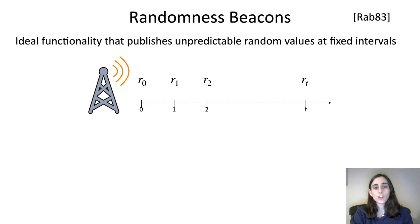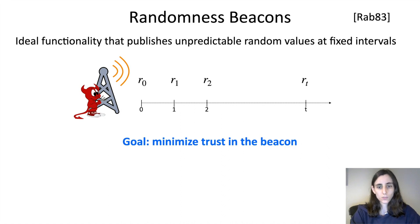This has many applications to generating randomness in decentralized settings, so we really want to realize this ideal functionality in the real world. For example, suppose the randomness beacon is being run by a service provider that we don't necessarily trust. We still need to be able to use it in our applications, so the central question we're focusing on is how we can minimize trust in the beacon.